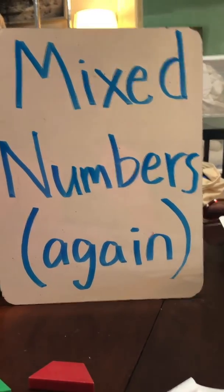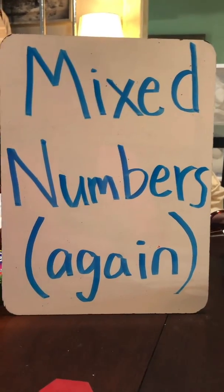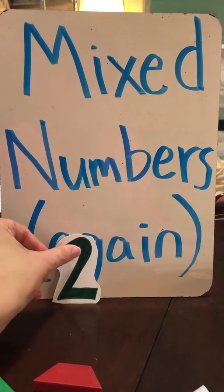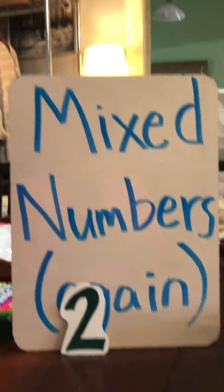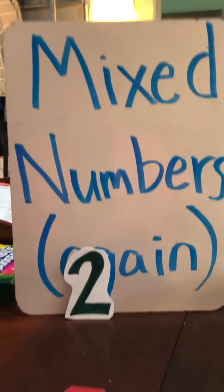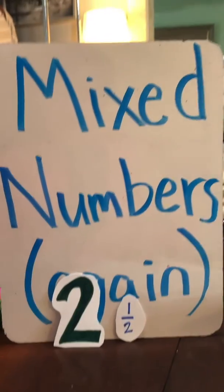Like we talked about last time, a mixed number is when you take a whole number, like this here, number two, and put that whole number together with a fraction, like this here, one half.